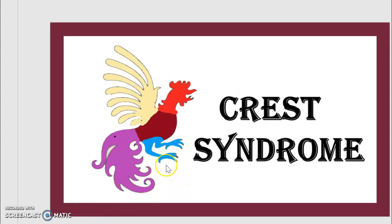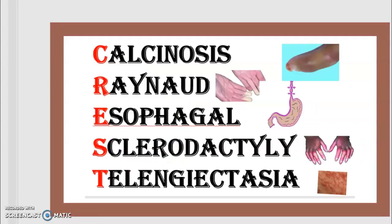To fix ideas, think about the rooster crest. CREST Syndrome, also known as the limited cutaneous form of systemic sclerosis, is a connective tissue disease. The acronym CREST refers to five main features: calcinosis, Raynaud's phenomenon, esophageal motility disorder, sclerodactyly, and telangiectasia.